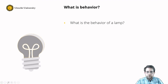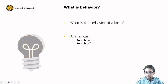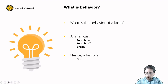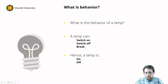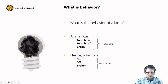What is the behavior of a lamp? We need to ask: what can a lamp do? A lamp can switch on, it can switch off, and as this is a normal lamp it can also break. So if a lamp switches on, the lamp is on; if we switch it off, the lamp is off; and if the lamp breaks, it is broken. We refer to the former as actions, and to the latter as states.